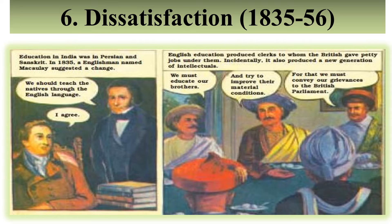Indians were not getting enough money from the British side, so their financial condition was poor — they were only earning and eating, not able to save anything for the future. The intellectuals — the well-educated people — planned to think about the other members of their society and improve their material conditions. For that, they also planned to complain to the British Parliament against the rules that were prevailing for the Indian people under British rule.